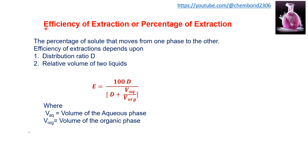The efficiency or percentage of extraction is the percentage of solute that moves from one phase to another. It depends upon the distribution ratio and the relative volume of the two liquids, where V aqueous is the volume of the aqueous phase and V organic is the volume of the organic phase.